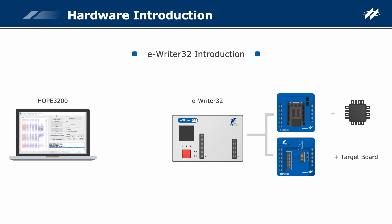Second, this writer supports an online programming mode that needs to connect with a PC, and an offline programming mode that does not require a PC connection, which is powerful and flexible. In the online mode, a USB 2.0 cable is required to connect to the PC and eWriter32, after which the writer can execute data download, erase, program, verify, and other operations using the Hope3200.